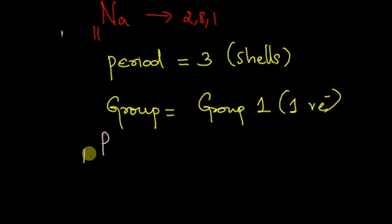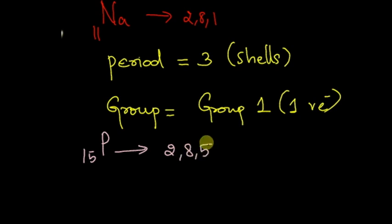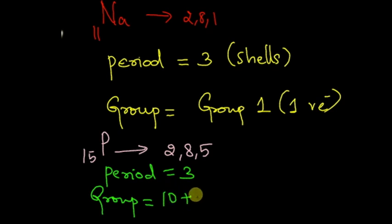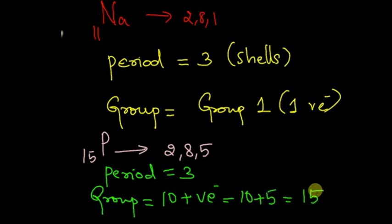Now let us try for phosphorus with atomic number 15. The electronic configuration is 2, 8, 5, and it has 3 shells, so the period would be 3. For the group, the number of valence electrons is 5. According to the rule, we go 10 plus valence electrons, which is 10 plus 5 equals 15. Phosphorus belongs to group 15, period 3.